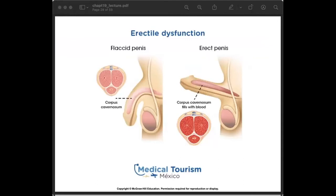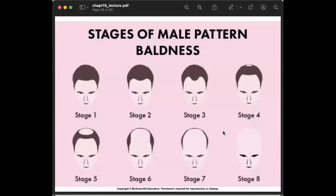Some male individuals experience erectile dysfunction, which is the failure to achieve erections, also called impotence. There is also male pattern baldness, which is a genetic disorder affecting hair growth patterns over time.